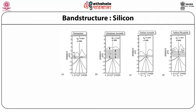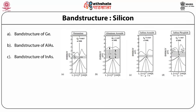The band structure of germanium shows a band gap of ~0.66 eV at 300 K. Aluminum arsenide has an energy band gap of ~2.15 eV at 300 K. Indium arsenide has an energy band gap of ~0.35 eV at 300 K. Indium phosphide has an energy band gap of ~1.34 eV at 300 K.